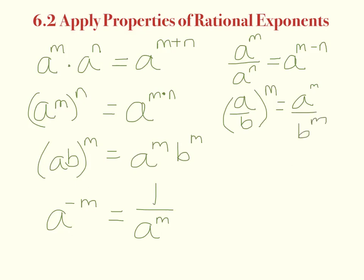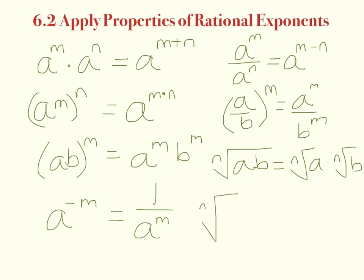If we take the nth root of two numbers multiplied together, we can split it up into the nth root of a times the nth root of b. Similarly, the nth root of a fraction can be split as the nth root of a divided by the nth root of b. These are the properties we're going to use today.